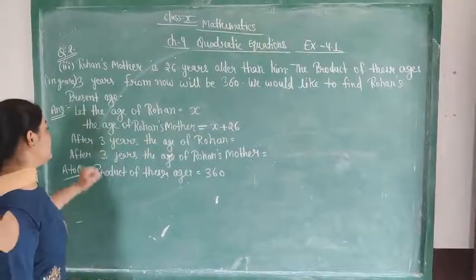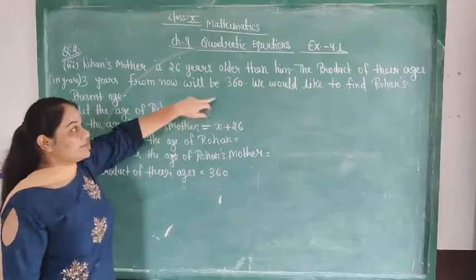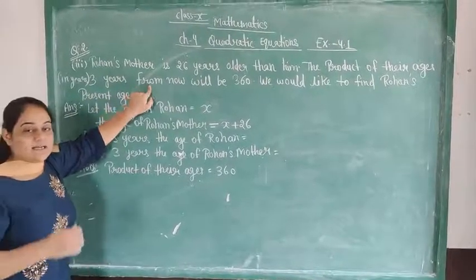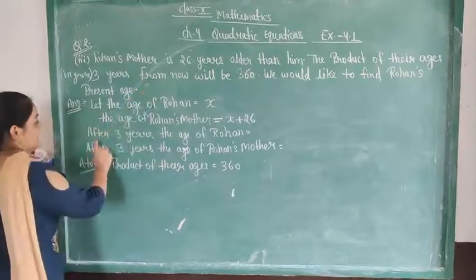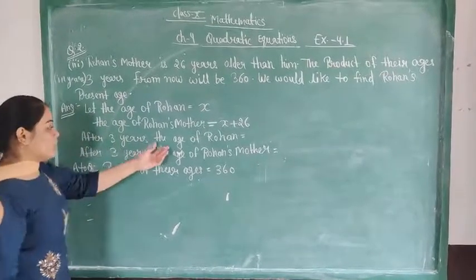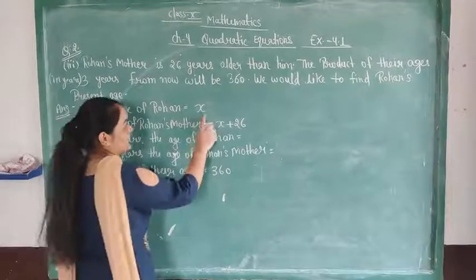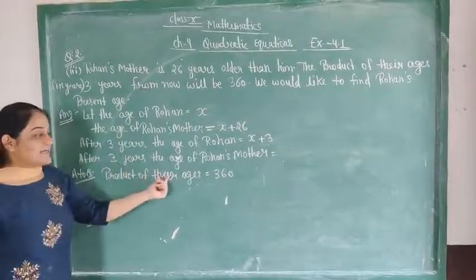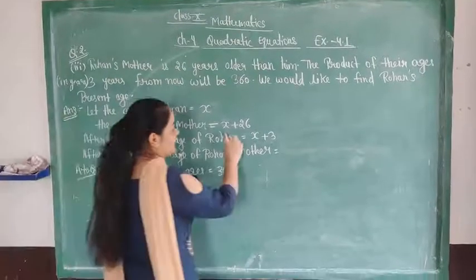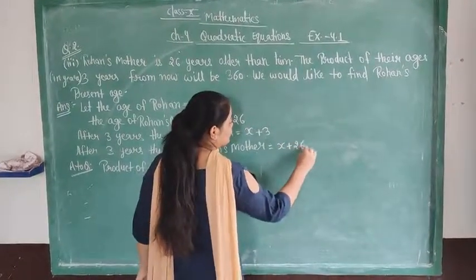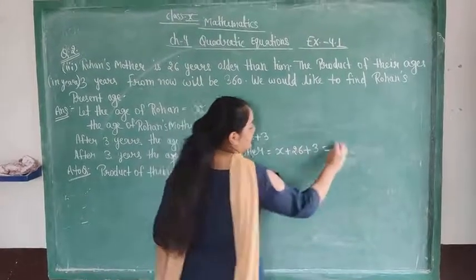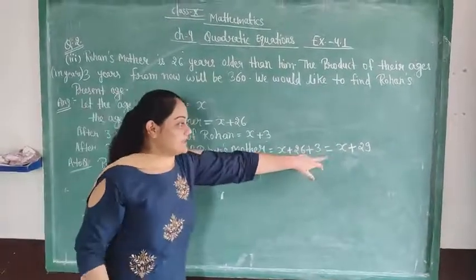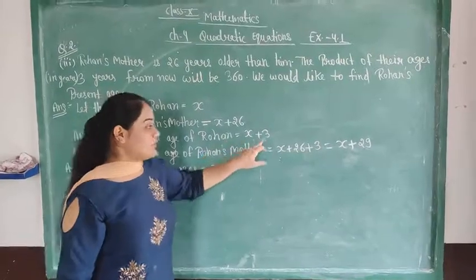After 3 years, Roman's age will be x plus 3. After 3 years, the age of Roman's mother, Roman's mother is 26 years older, x plus 26, and after 3 years it will be x plus 29. So after 3 years, Roman is x plus 3 and Roman's mother is x plus 29.